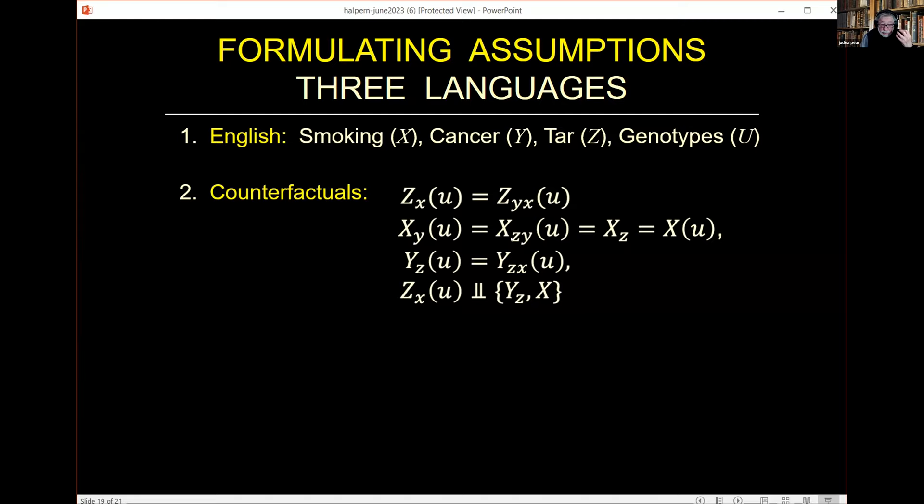Each one of the function assumptions is formulated in terms of a sentence in counterfactual notation. And then from this you have to derive an answer to the question: what if I have information, what if I have probability on the observables X, Y, and Z, and I'm trying to find what the degree of effect smoking has on cancer. This is how the camp called the potential outcome operates.